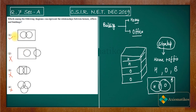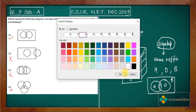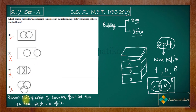This is what the question asks: which diagram can represent the relationship between houses, offices, and buildings. Writing it formally: building consists of houses as well as offices, and there is a house which is also an office. According to this relation, option A is true.